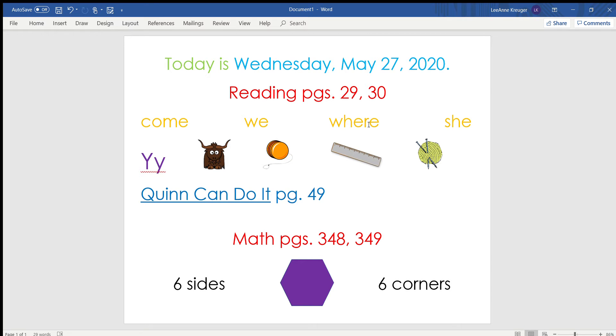Hi boys and girls, I hope you're doing great today. It should be another beautiful day outside. Today is Wednesday, May 27th, 2020, and for your reading work today you have two pages, page 29 and page 30. You'll first review those four sight words that we've been working with.